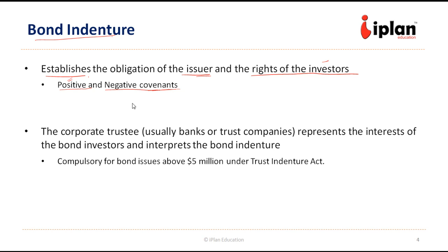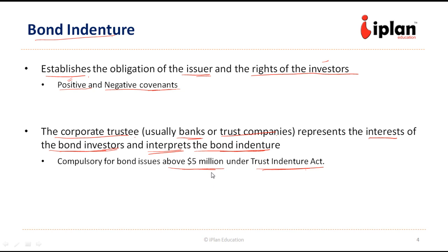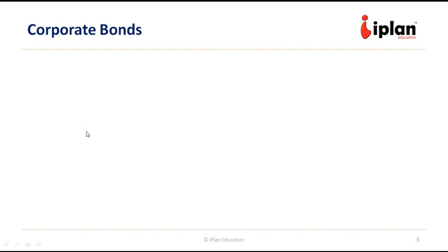The role of the corporate trustee is typically played by banks or trust companies, who represent the interest of the bond investors and interpret the bond indenture on their behalf. They also authenticate the issue, which includes keeping track of the amounts of bonds issued and ensuring the number does not exceed the limit specified in the indenture. According to the Trust Indenture Act, for all corporate bonds where the offering is above $5 million, it is mandatory to have a corporate trustee.